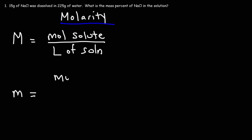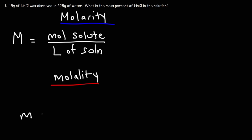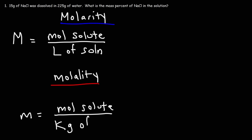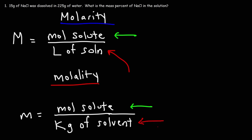Molality — spelled with an L instead of an R — is equal to the moles of the solute divided by the kilograms of the solvent, not the solution. So both molarity and molality have moles of solute on top, but for molarity you divide by the volume of the solution in liters, and for molality you divide by the mass of the solvent in kilograms.